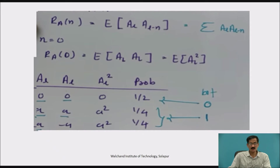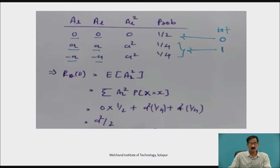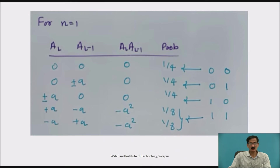For bit 0, A_L is 0, so A_L² is 0, with probability one-half. For bit 1, A_L may be plus A, so A_L² = A² with probability one-fourth; or A_L may be minus A, so A_L² = A² with probability one-fourth. So R_A(0) = 0·(1/2) + A²·(1/4) + A²·(1/4) = A²/2. This is the autocorrelation R_A when N equals 0.